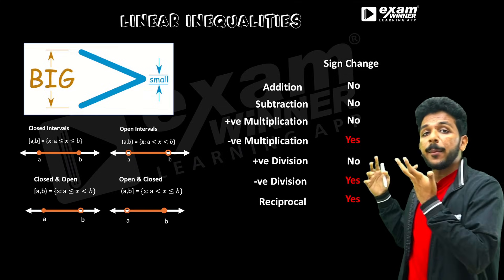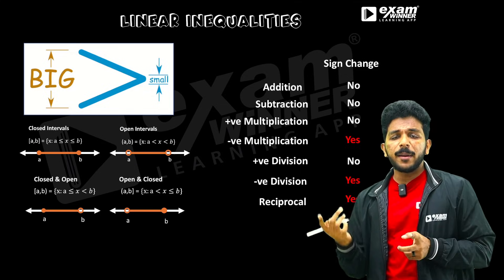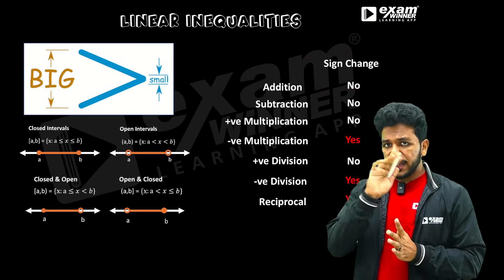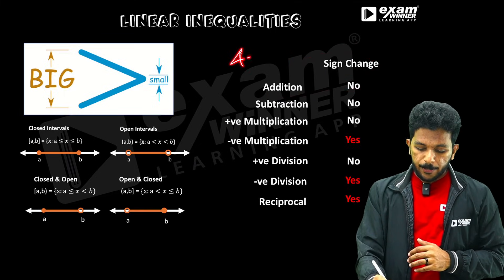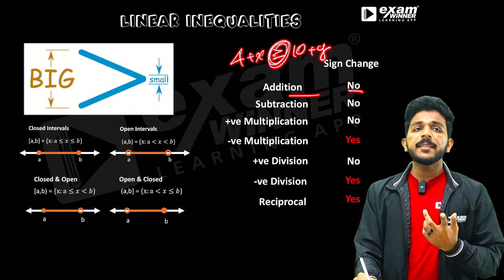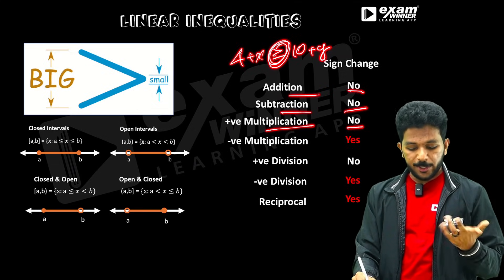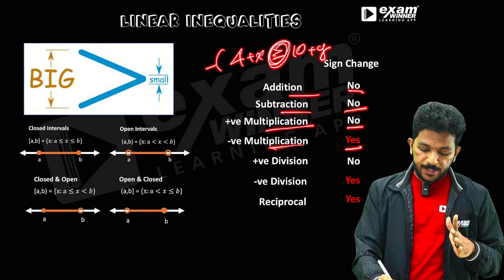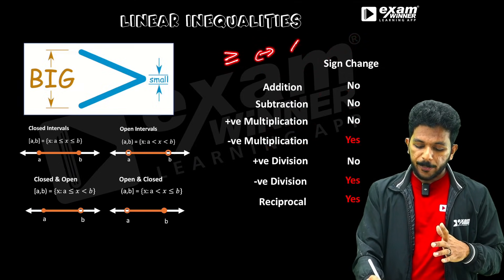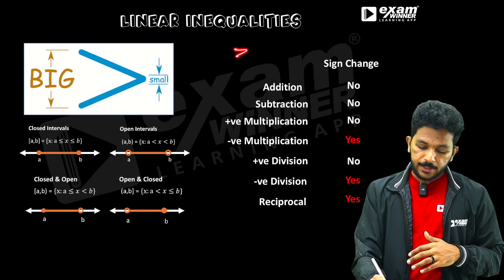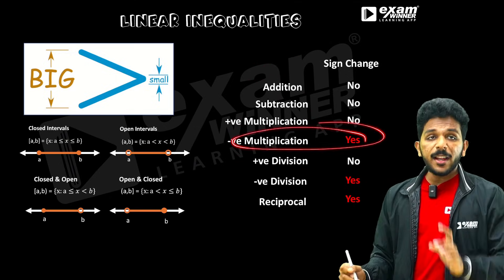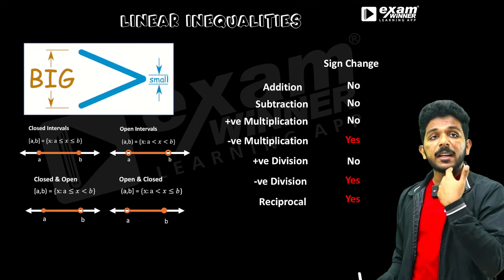If we perform operations, the inequality symbol is important. For addition and subtraction, there is no sign change. For example: 4 plus x greater than or equal to 2 plus y. How do you change the symbol? When you multiply or divide by a negative number, the inequality sign changes. For example, multiplying by minus 1: greater than becomes less than.